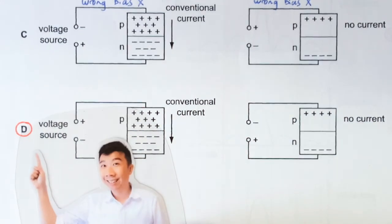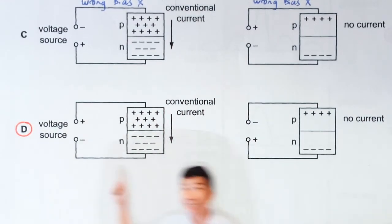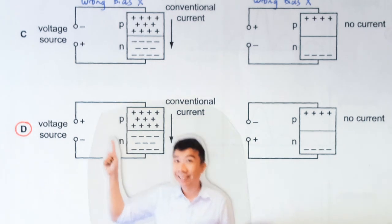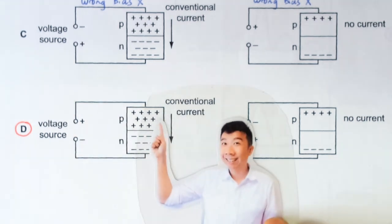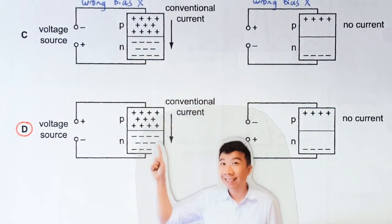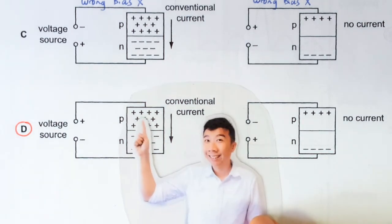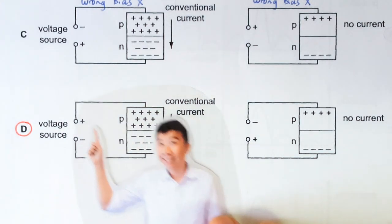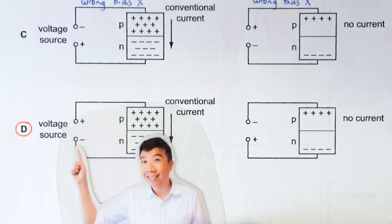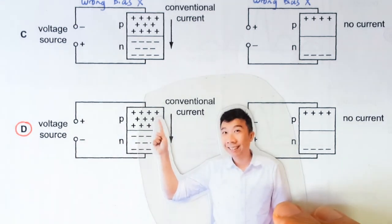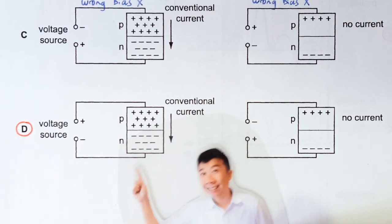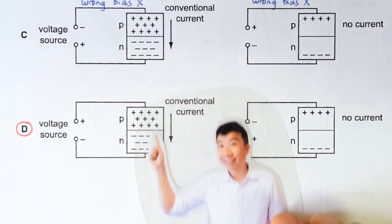Let's talk about option D, which is the correct option. This diagram here shows the diode, the p-n junction in forward bias, because the P side is connected to the positive terminal and the N side is connected to the negative terminal. It correctly shows that a p-n junction in forward bias has a conventional current flowing this way.